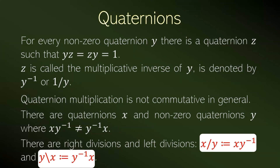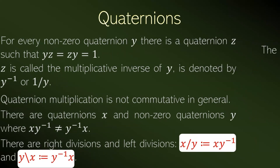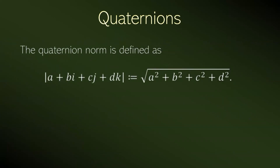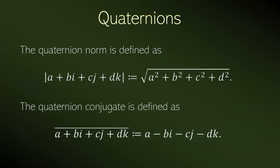The quaternion norm, or modulus, is defined as usual by vectors in a vector space. And the quaternion conjugate is defined in a similar way to complex numbers.